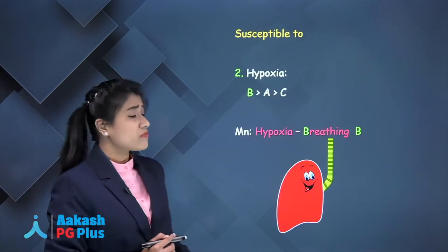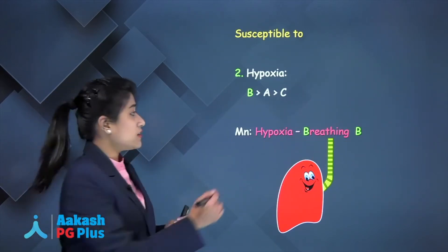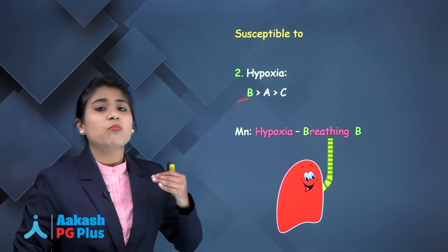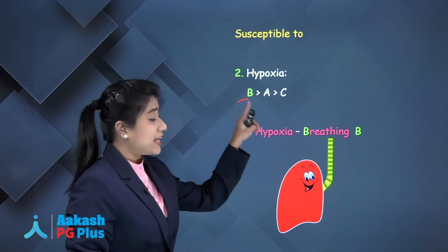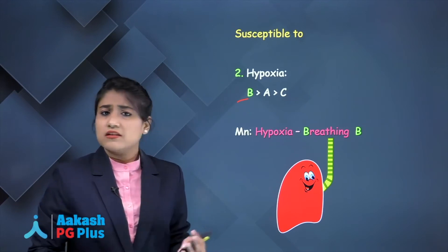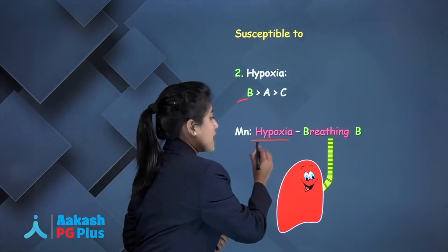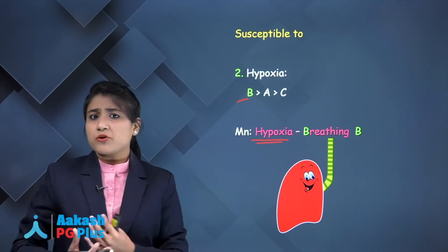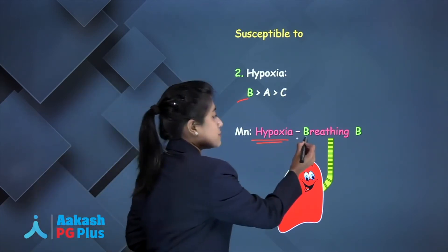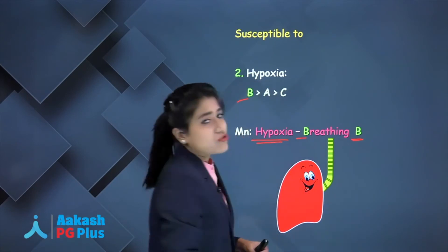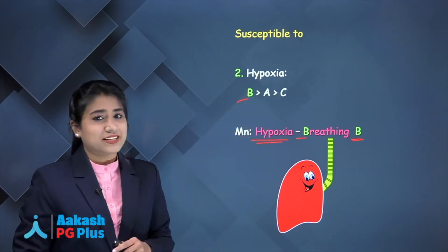For susceptibility to hypoxia, B fibers are most susceptible, followed by A, then C. How to remember: hypoxia causes a breathing problem, and breathing is B — so B fibers are most susceptible to hypoxia.